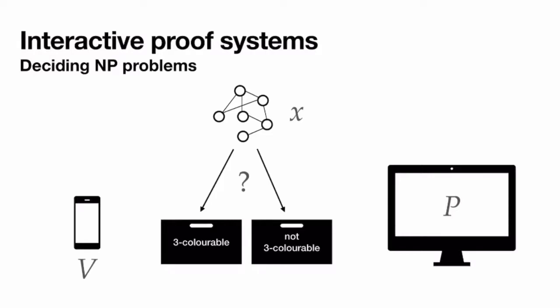Three-coloring is a problem that's complete for NP, so if we can decide this problem we can decide any problem in NP. The setup we'll use is a weak probabilistic polynomial-time verifier and an unbounded but untrusted prover. We want to design a protocol so that after interacting with the prover, the verifier knows whether x is three-colorable or not.